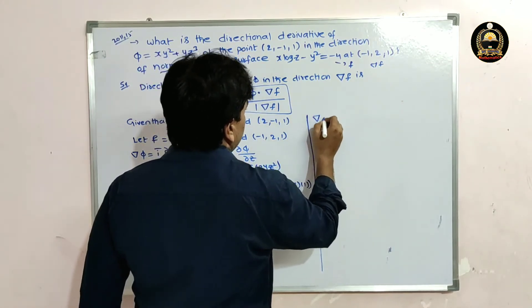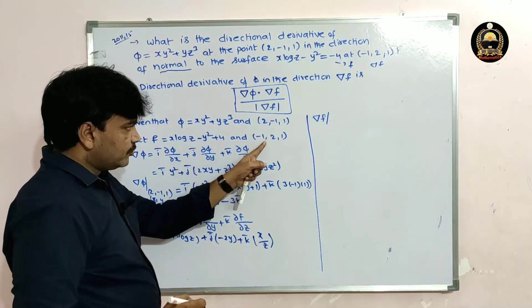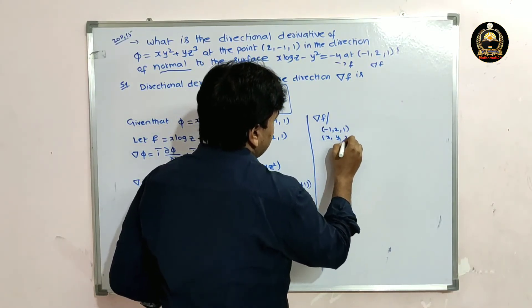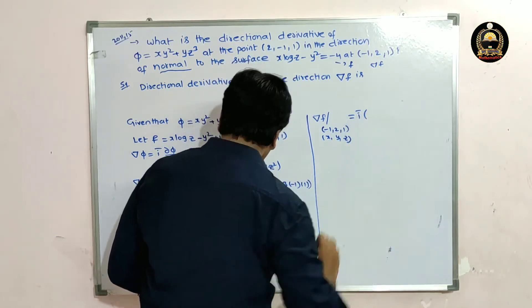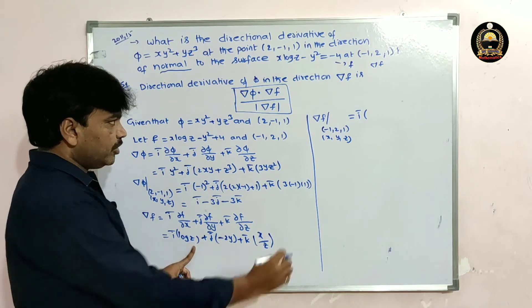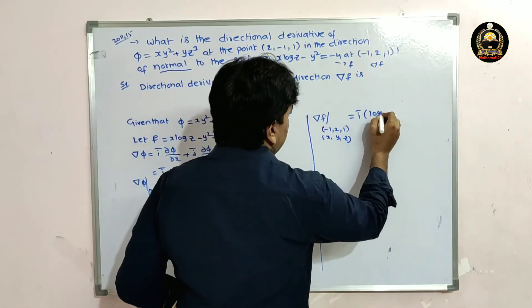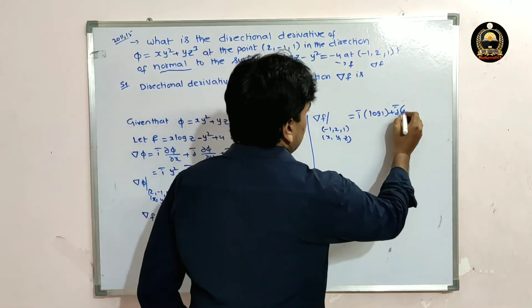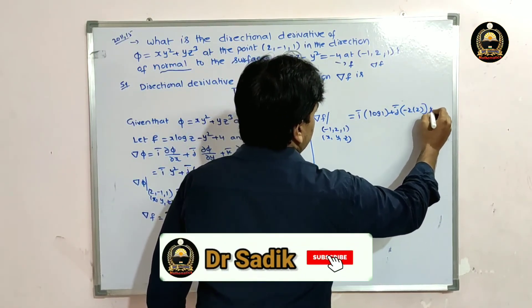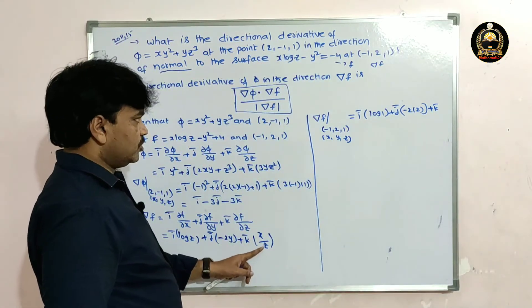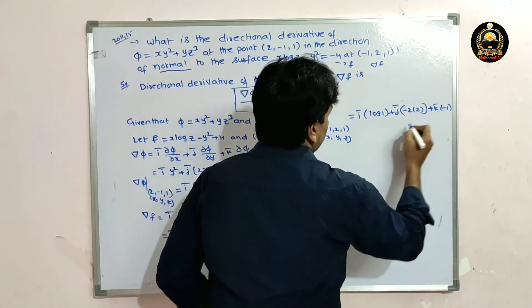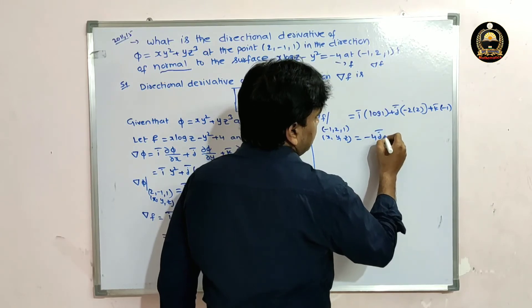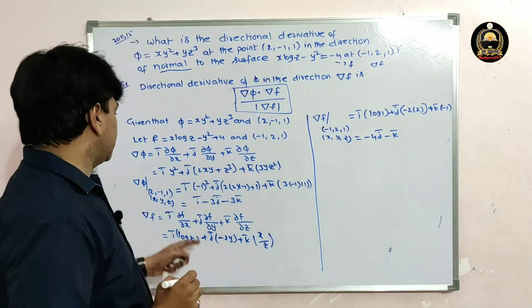Substituting the point (−1, 2, 1) — where x=−1, y=2, z=1 — into del f: i·log(1) + j·(−2·2) + k·(−1/1) = i·0 + j·(−4) + k·(−1) = −4j − k.